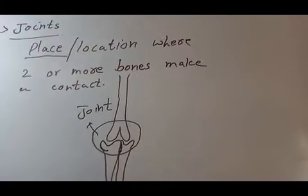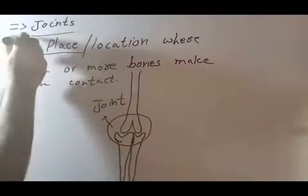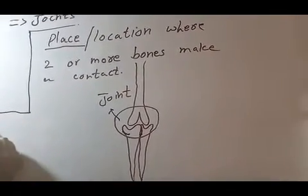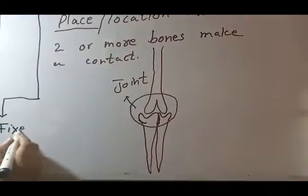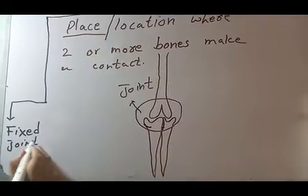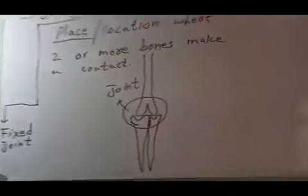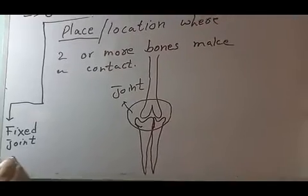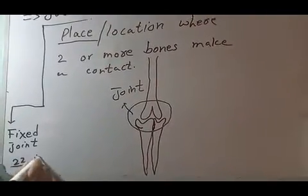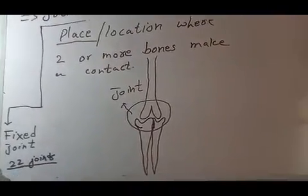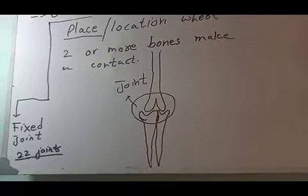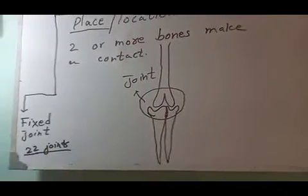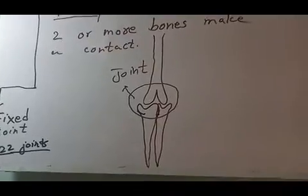Now we talk about the types of joints mentioned in your books. There are three types of joints described in your book. The first is fixed joints. Fixed joints are the joints present in parts of the body that are not moving at all. For example, in our skull there are 22 joints because there are 22 bones, and each bone is joined to another bone making a fixed joint. We cannot pull a part of our skull to the outside.